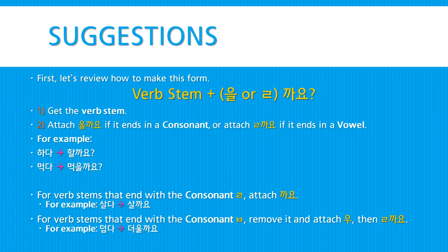For example, 살다 — to live — would become 살까요. And for verb stems that end with the consonant ㅂ, remove it and attach 우, like usual, then ㄹ followed by 까요. For example, 덥다 — to feel hot, or the weather's hot — would become 더울까요.